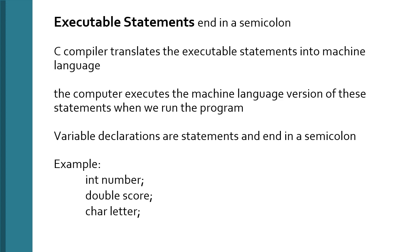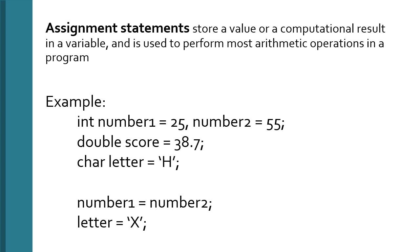Here are more examples showing that executable statements end in a semicolon, along with examples of declarations and initializations. The declaration `int number1 = 25;` is both a declaration and initialization because it's being assigned the value of 25. Down here is just an assignment statement — the value of `number2` is being assigned to `number1`. In C, the receiver of the assignment is on the left side. After this executes, both `number1` and `number2` will have the value of 55.